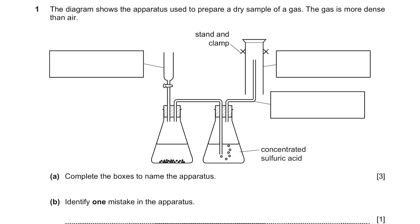Question 1. The diagram shows the apparatus used to prepare a dry sample of a gas. The gas is more dense than air. Part A. Complete the boxes to name the apparatus. The left one here is the separating funnel. It is used to put only a specific type of substance, let's say when you only want to put water from oil and water mixture. This long thin passageway is the delivery tube. It is used to deliver gases produced from the reaction inside the flask. And the delivery tube is connected to the gas jar, something that is used to collect gas.